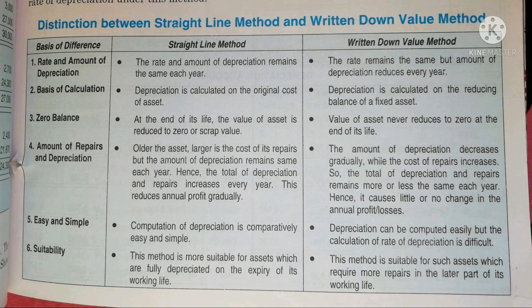The second difference is the basis of calculation. Under the Straight Line Method, depreciation is calculated on the original cost of assets, as we have mentioned that depreciation is calculated on the original cost of assets.